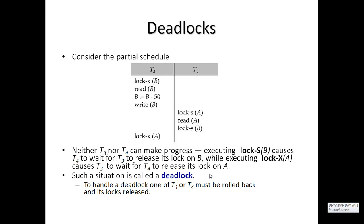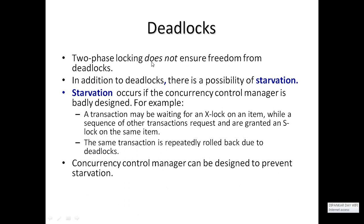Two-phase locking protocol does not ensure freedom from deadlock. In addition to deadlock, there is a possibility of starvation. Starvation occurs if the concurrency control manager is badly designed. When a transaction gets shared mode permission and completes execution, another transaction performs shared mode again, creating a sequence. When another transaction requests exclusive mode, it cannot get permission until all the series of shared transactions complete.